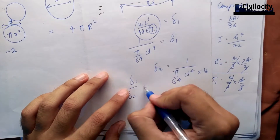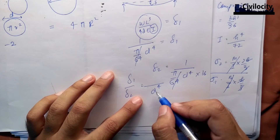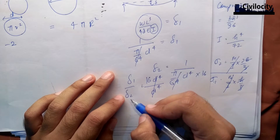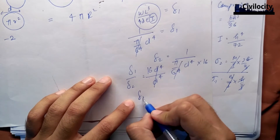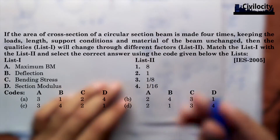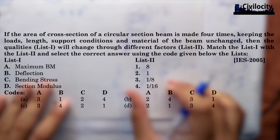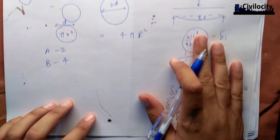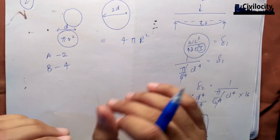Now, comparing deflection 1 to deflection 2: delta1/delta2 = I2/I1 = 16D⁴ / D⁴ = 16. Therefore, delta2/delta1 = 1/16. This means the deflection in the second beam is 1/16th of the first beam. So the answer for deflection is option 4, meaning B maps to 4. If this calculation is unclear, go back and review it.